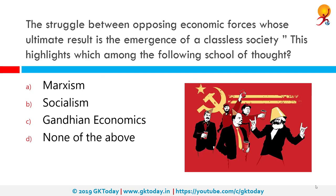The struggle between opposing economic forces whose ultimate result is the emergence of a classless society highlights which among the following schools of thought? The correct answer is Marxism. Marxism is a theory and method of working-class self-emancipation. As a theory, it relies on a method of socio-economic analysis that views class relations and social conflict using a materialist interpretation of historical development and takes a dialectical view of social transformation.